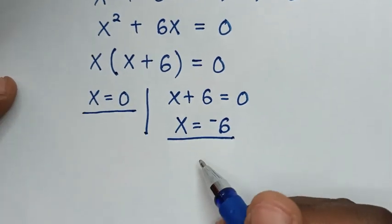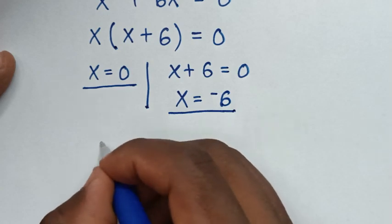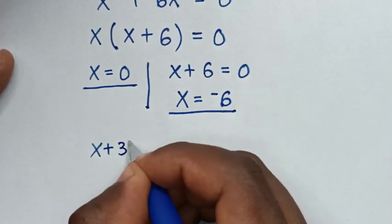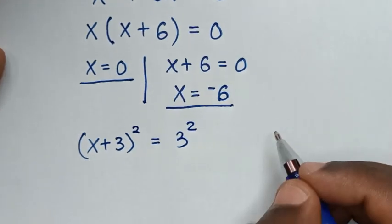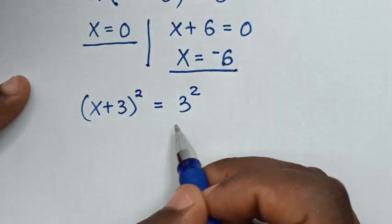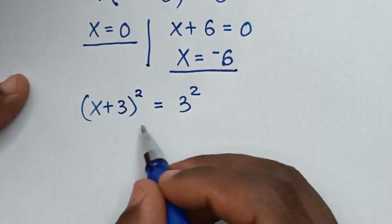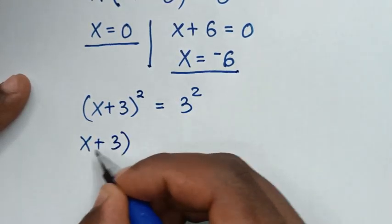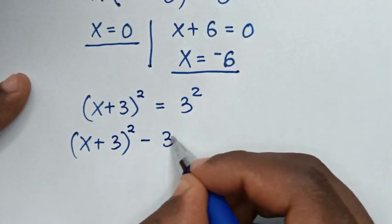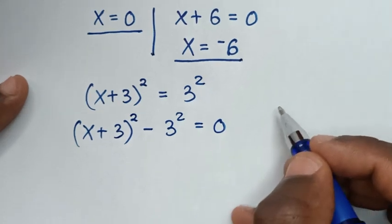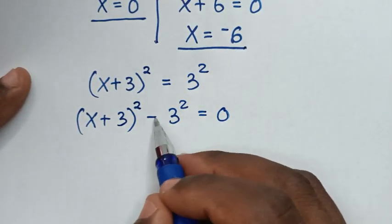Now let's solve this problem using another method. From the second method, we write the problem: (x + 3)² = 3². In the next step, we take 3² to the left side, so it becomes (x + 3)² − 3² = 0. Now the left side is in the form of difference of two squares.